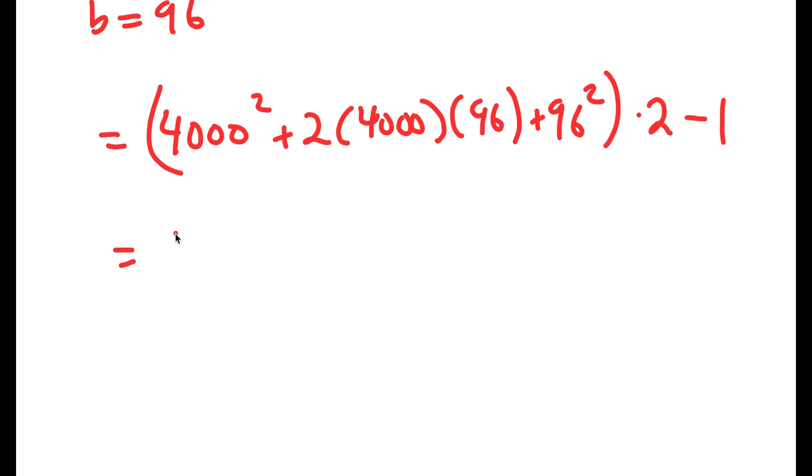Now 4,000 squared is equal to 16,000,000. 2 times 4,000 is 8,000 and 8,000 times 96 is equal to 768,000. And I have this plus 96 squared, which is equal to 9,216, and all of this I have times 2 minus 1.